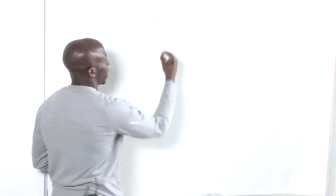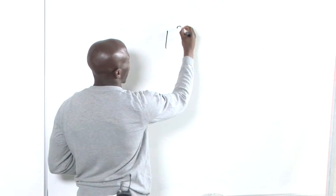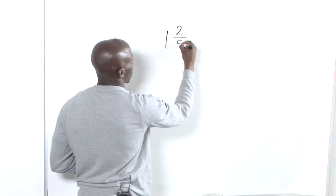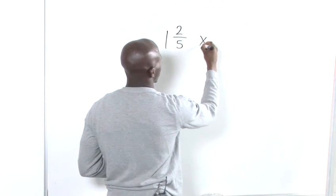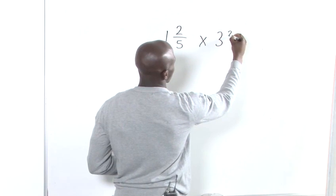I'm going to show you how to multiply mixed fractions. Now the first thing we want to do is put our mixed fractions on the board. So I'm going to do that now. Now we have 1 and 2 fifths multiplied by 3 and 2 thirds.